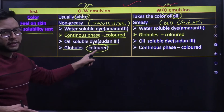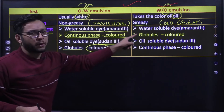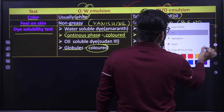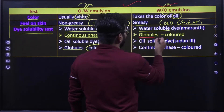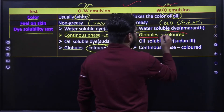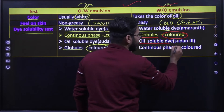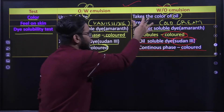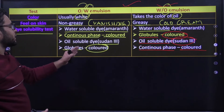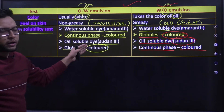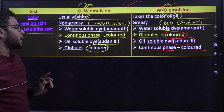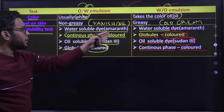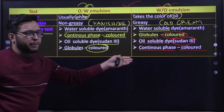Water in oil में यह reverse होता है — water-soluble dye के साथ globules color दिखाएंगे, और oil-soluble dye Sudan 3 के साथ continuous phase color दिखाएगा. इससे हम identify कर सकते हैं कि oil in water कौन सा है और water in oil कौन सा. Continuous phase vs. globules — यह basic principle है.